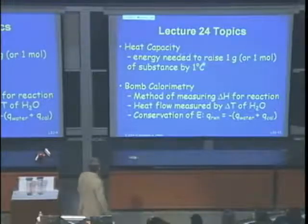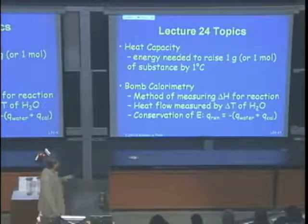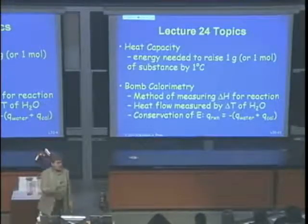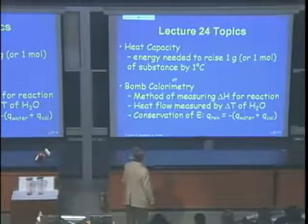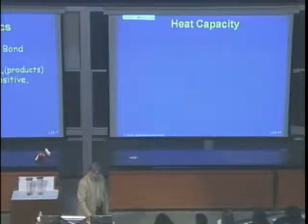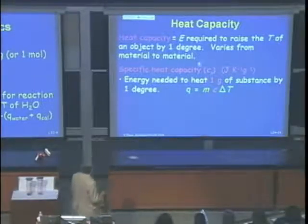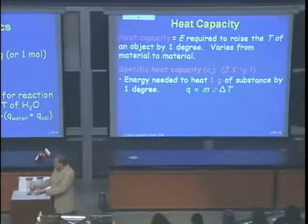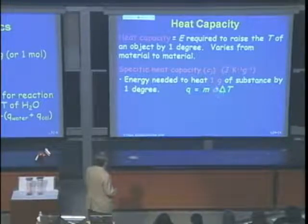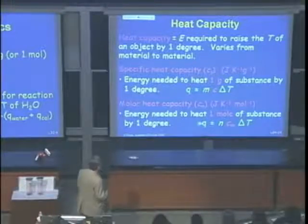Heat capacity is the heat required to raise an object's temperature by one degree — it varies by material. Specific heat capacity (C_s) is per gram; molar heat capacity (C_m) is per mole. These are used to calculate heat exchange in calorimetry: q = m·C_s·ΔT. Calorimeter measurements require accounting for the calorimeter's own heat constant.